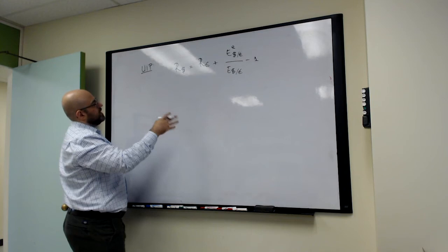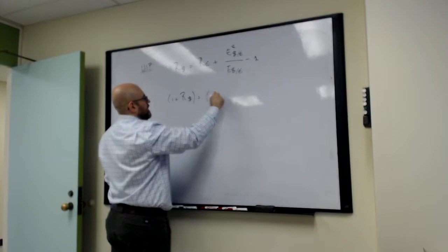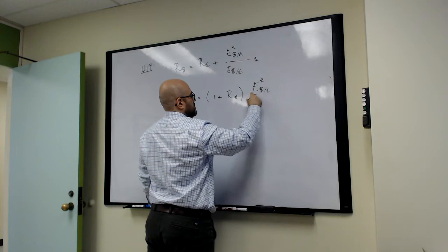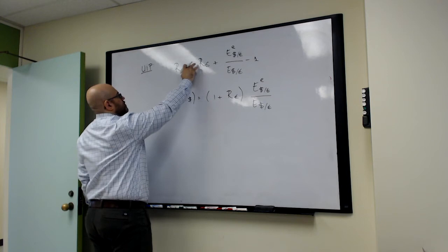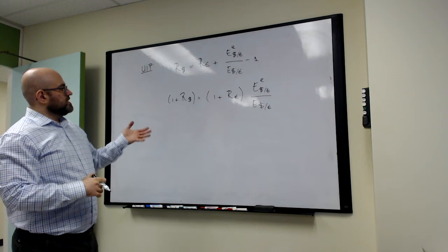This is the approximation form of UIP. We derive this by taking logs and using a log approximation. The version without approximation is very similar but has the gross rate of return, so 1 plus R instead of just R. The top one is the one we usually use, it's a slight approximation. The bottom one is the precise one we derived from this exercise of no arbitrage in currency markets.